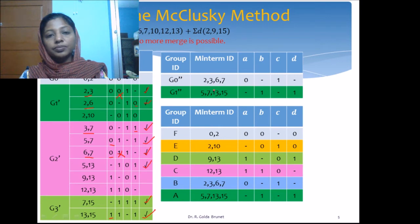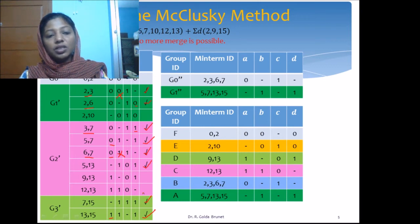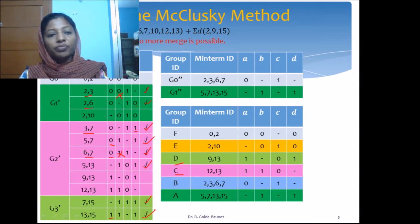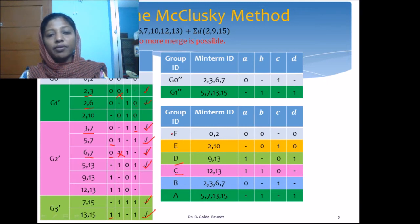Now we label the prime implicants from bottom to top. We label the entries: 5,7,13,15 as A; 2,3,6,7 as B. Whichever terms are not marked for merge become labeled prime implicants: 12,13 is labeled C; 9,13 is D; 2,10 is E; and 0,2 is F.